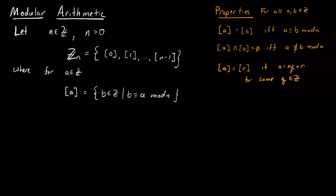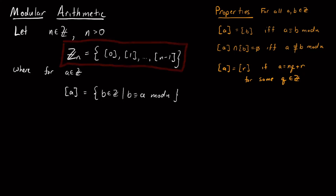The goal of this video is to talk about modular arithmetic. Given the set Z mod n — the set of equivalence classes modulo n — we'd like to define addition and multiplication in a well-defined way. We want to talk about what it means to add and multiply two equivalence classes in a way that is consistent.